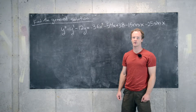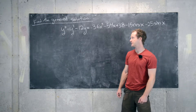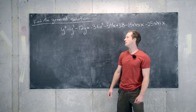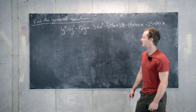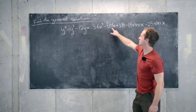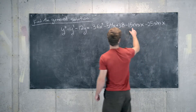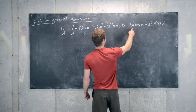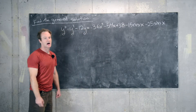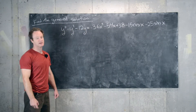In this video we want to look at the following non-homogeneous differential equation: y double prime minus y prime minus 12y equals minus 36x squared minus 54x plus 38 minus 15 cosine x minus 25 sine x. There's a lot going on here, but we'll break it down piece by piece.